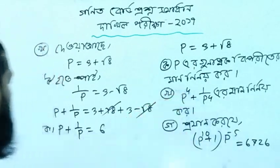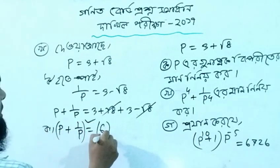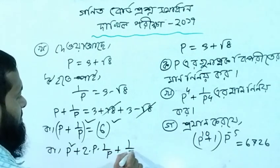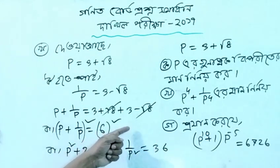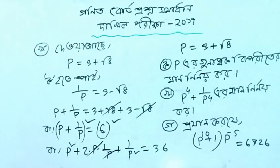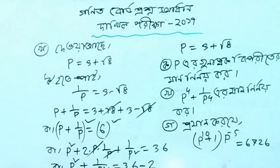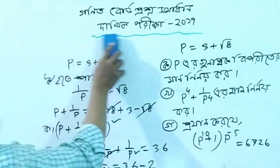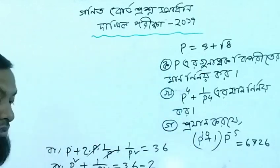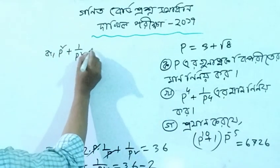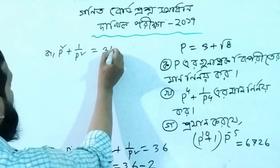p plus 1 by p equals 6. Now p squared plus 1 by p squared: using (p + 1/p)² = p² + 2 + 1/p², we get p squared plus 1 by p squared equals 6 squared minus 2, which equals 36 minus 2 equals 34.